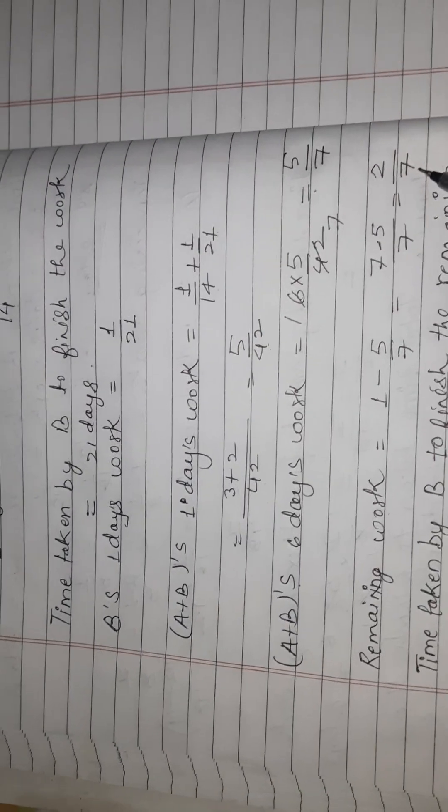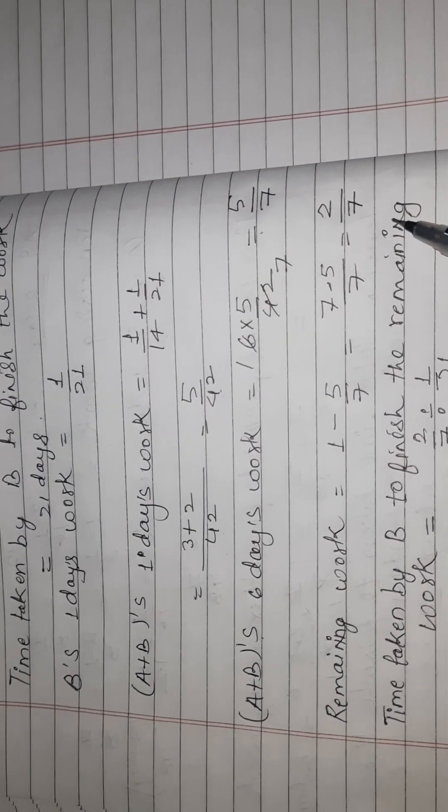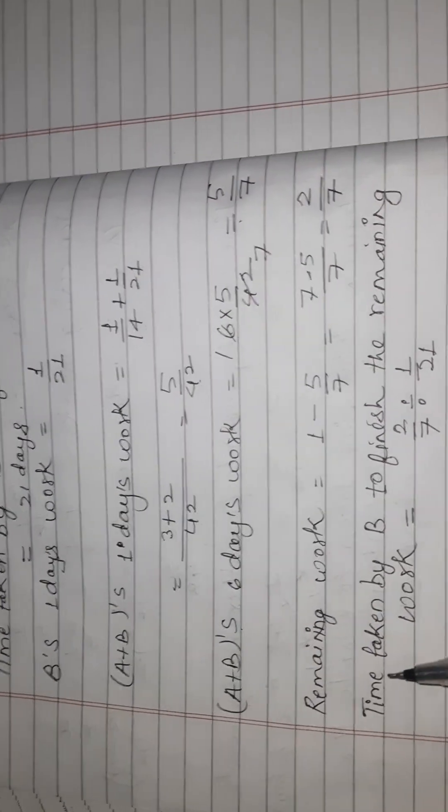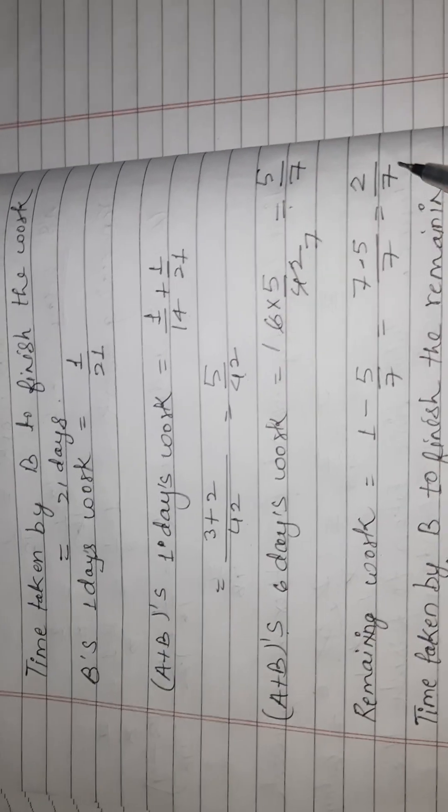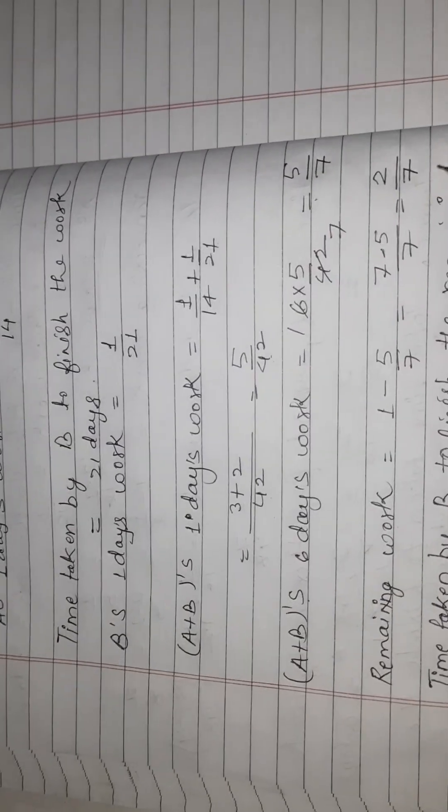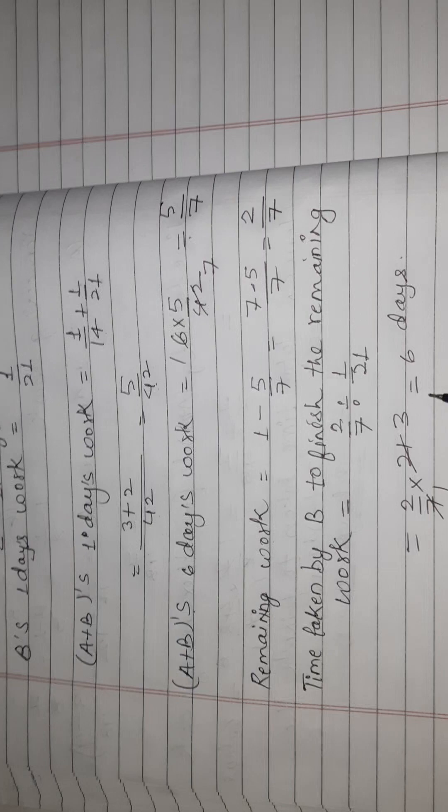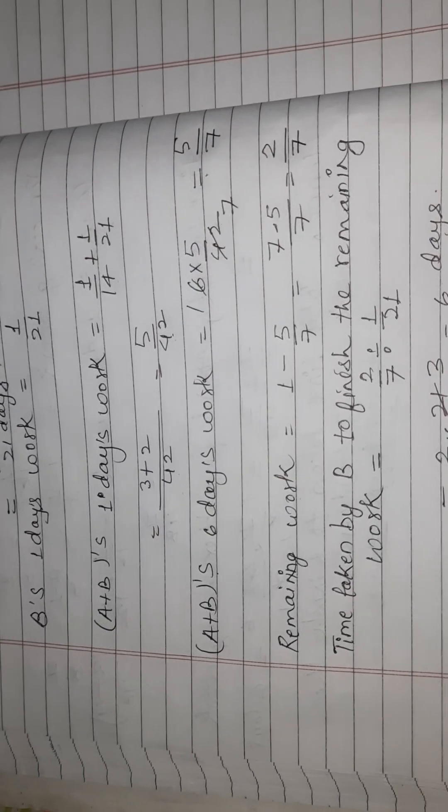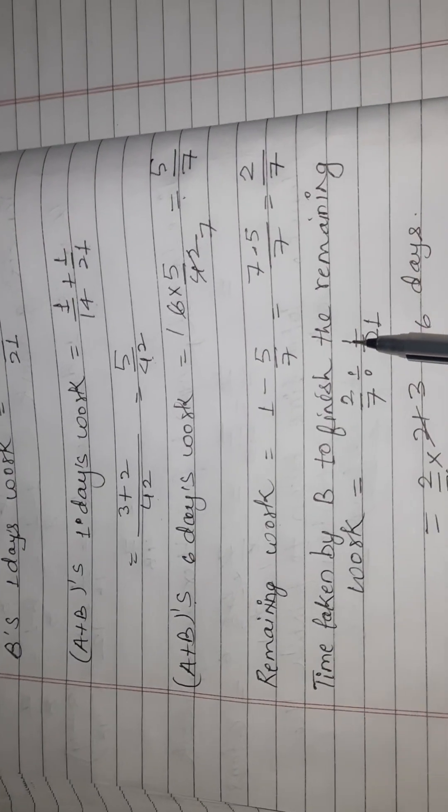Remaining work 2 upon 7 जिसको B अकेले करेगा क्योंकि A जो है वो भीमार हो गया है. So time taken by B to finish the remaining work - B को कितना time लगेगा इस work को finish करने में? Work upon B का one day का work हम divide करेंगे. Then हमें मिल जाएगा कि B उस बचे काम को कितने दिनों में कर पाएगा. Means 2 upon 7 divided by 1 upon 21. यहां पर इसको solve करेंगे, divide यहां से remove होगे, multiplication आगा, और यहां पर यह reciprocal हो जाएगा.